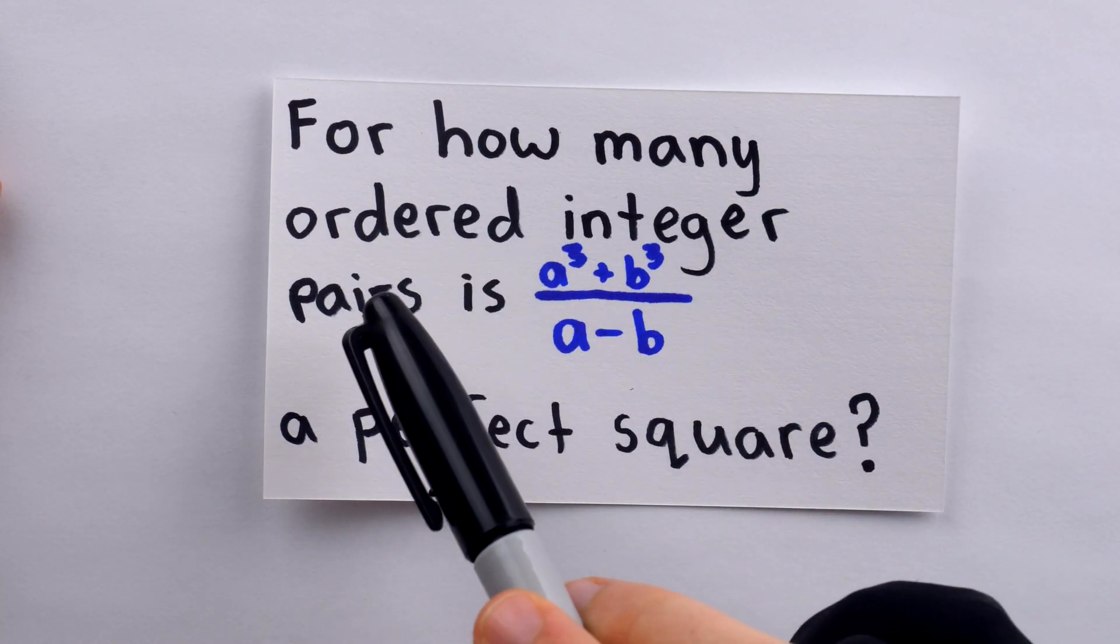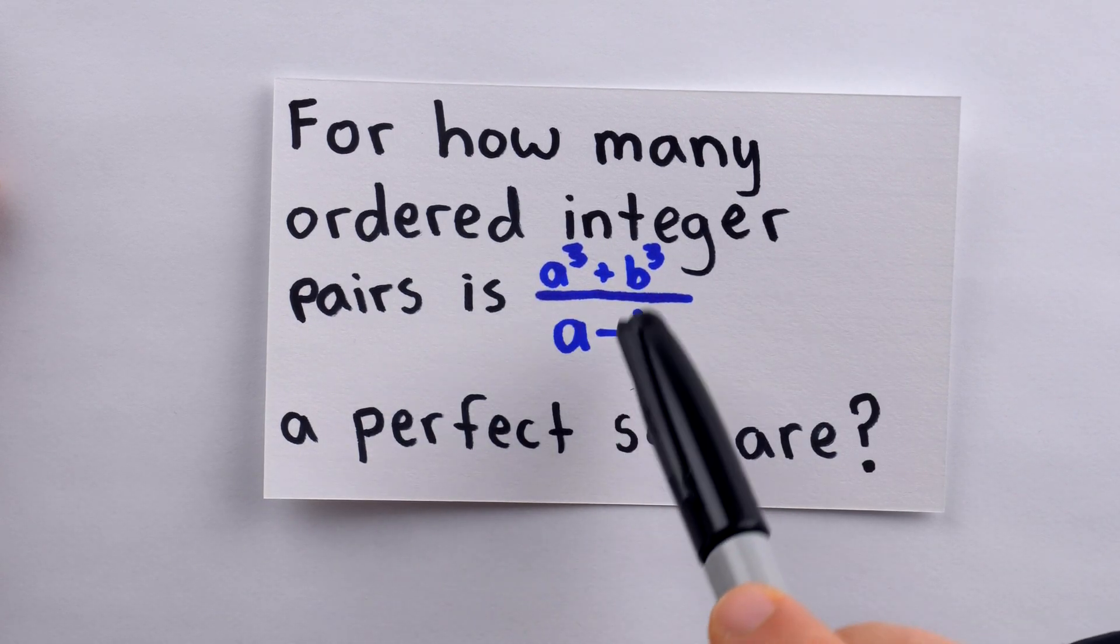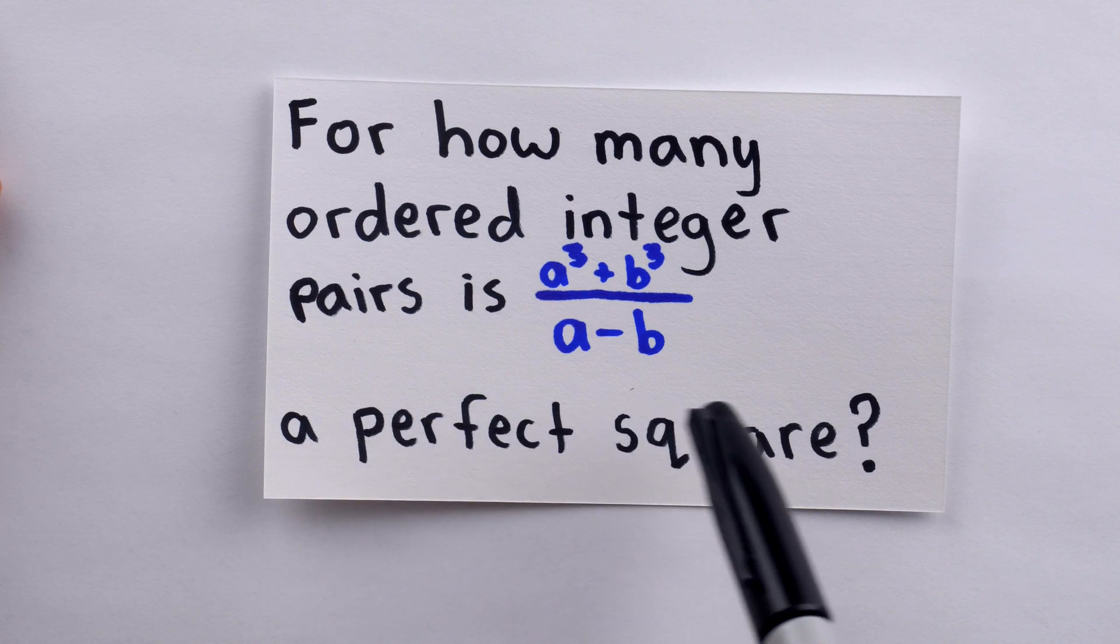For how many ordered integer pairs is this expression a³ + b³ divided by a - b a perfect square?